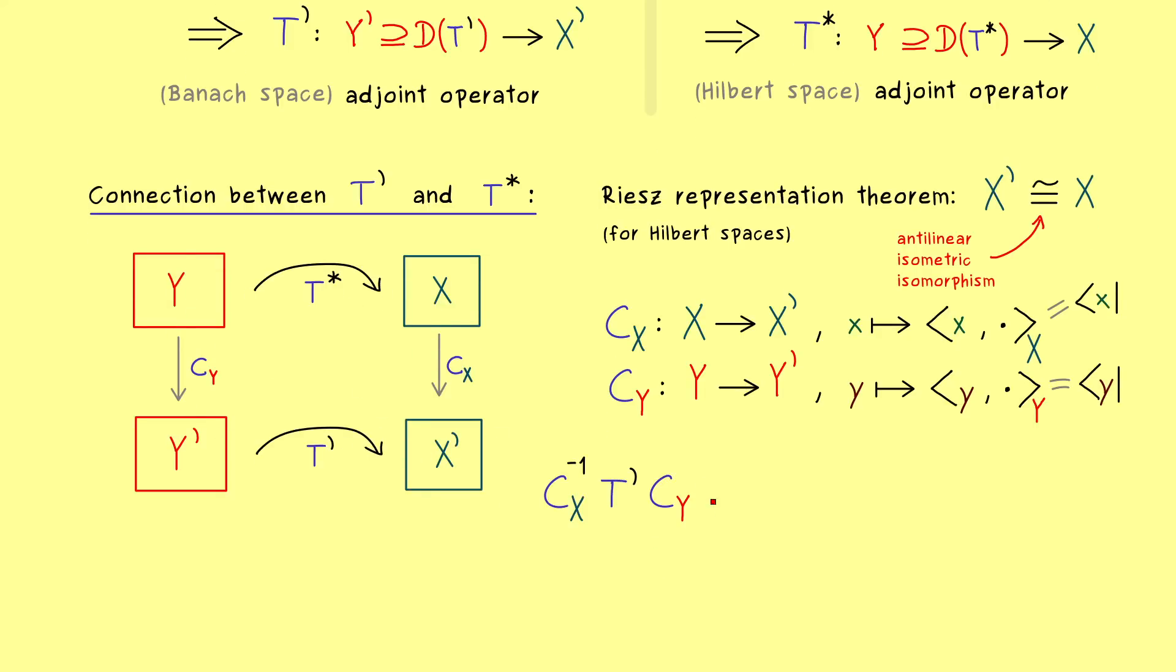More concretely, we want to consider the following composition: first applying C_Y, then T', and then going back with our C_X inverse. This means what we put in here is a vector y coming from the domain of T*. This is important because only these vectors we can put into T* at all. And indeed, we immediately see that the whole thing here is not complicated at all. What we have is T' of our linear functional of y.